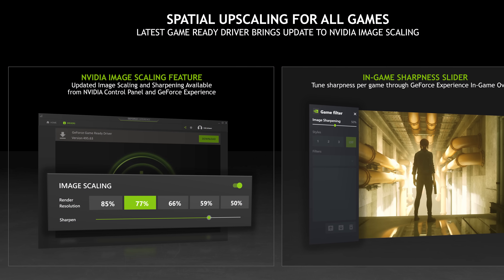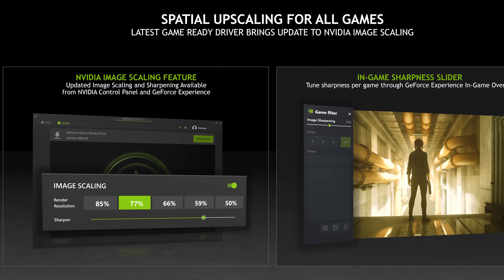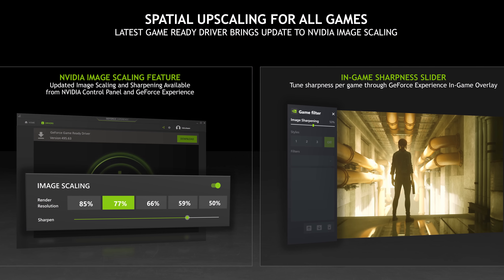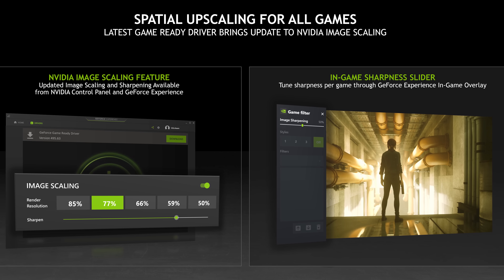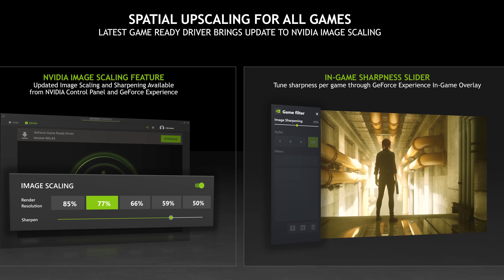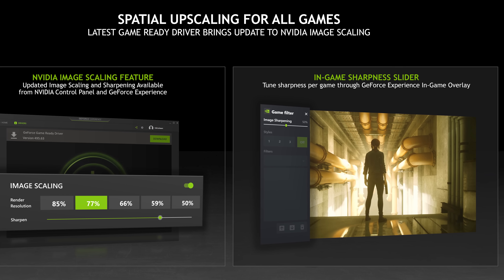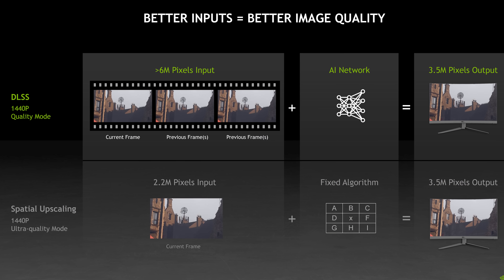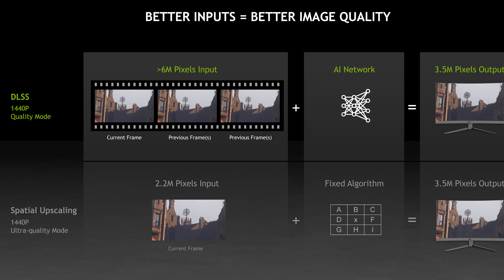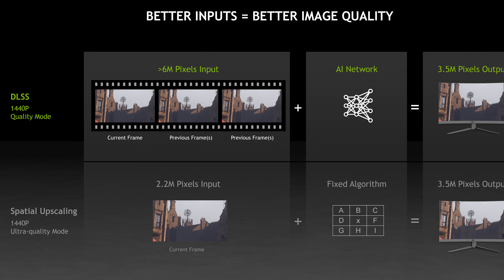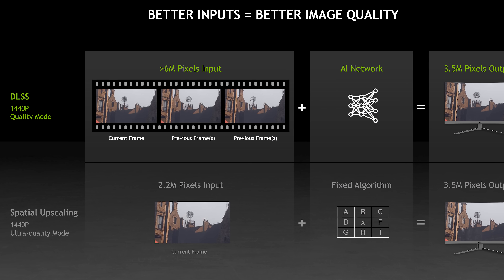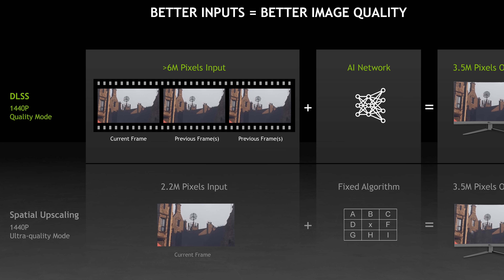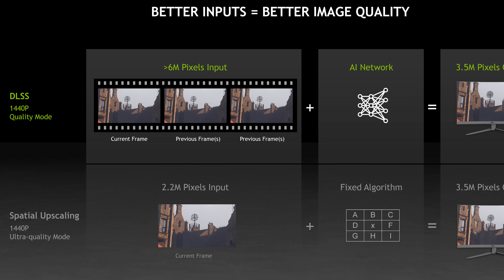Like FSR, NIS is a spatial upscaling technology that includes both an upscaling and sharpening path in an attempt to mimic native resolution without the complexity of a temporal solution. Spatial upscaling is simpler and doesn't rely on things like past frames, jittering, or motion vectors for the final output image, which means it can be implemented both in games and at a driver level.